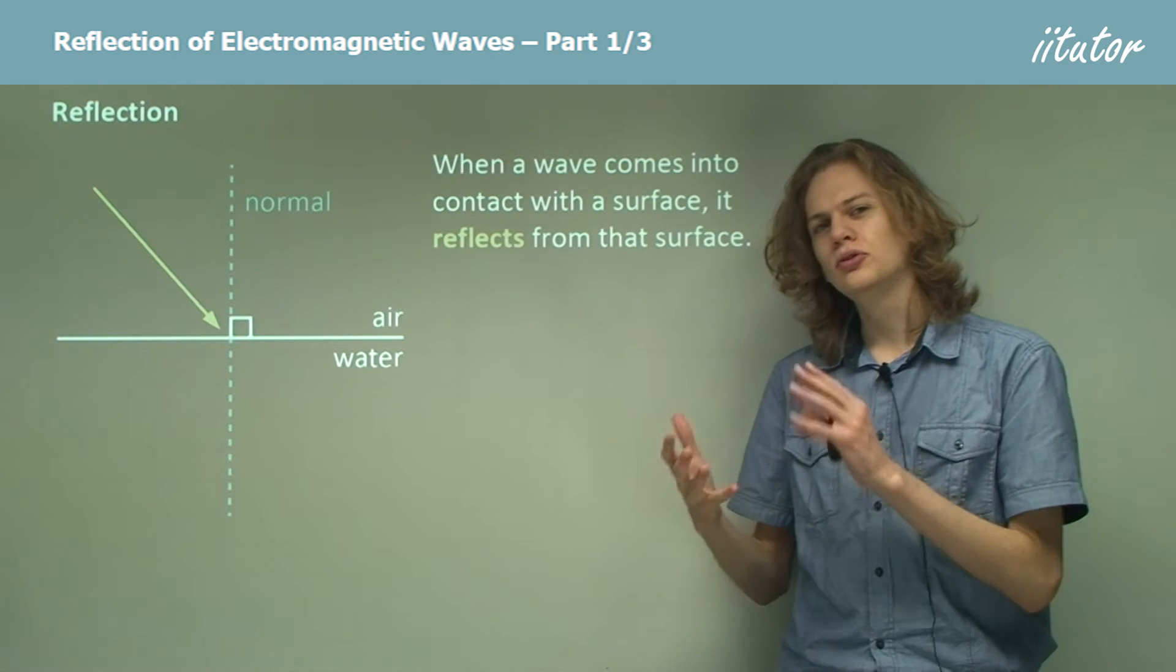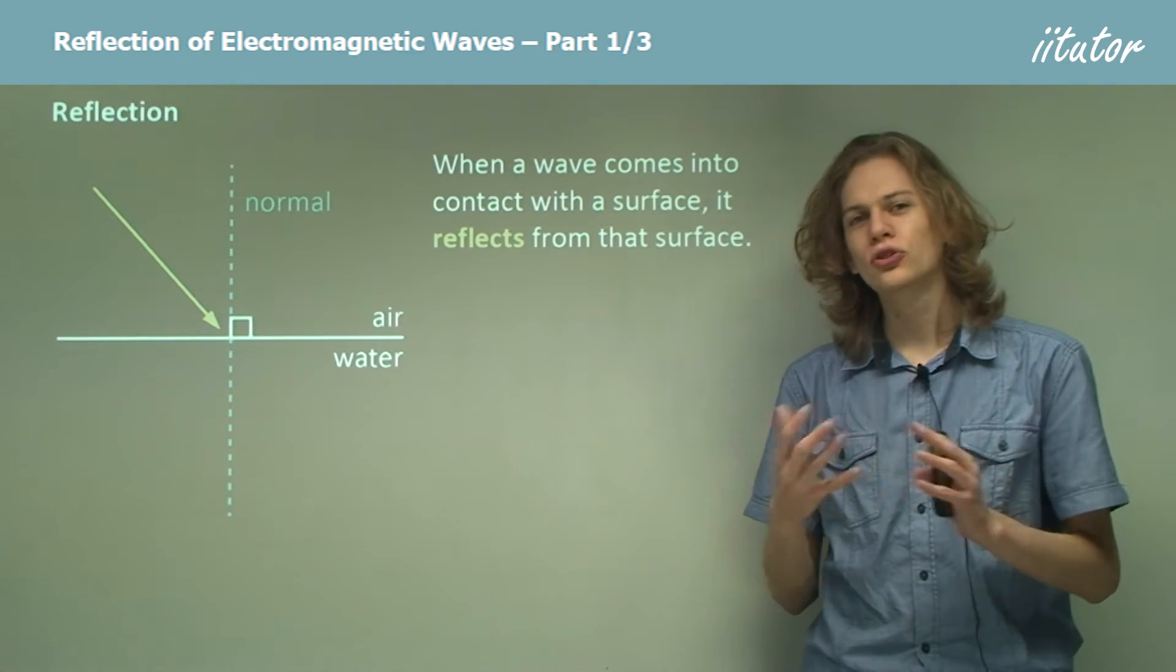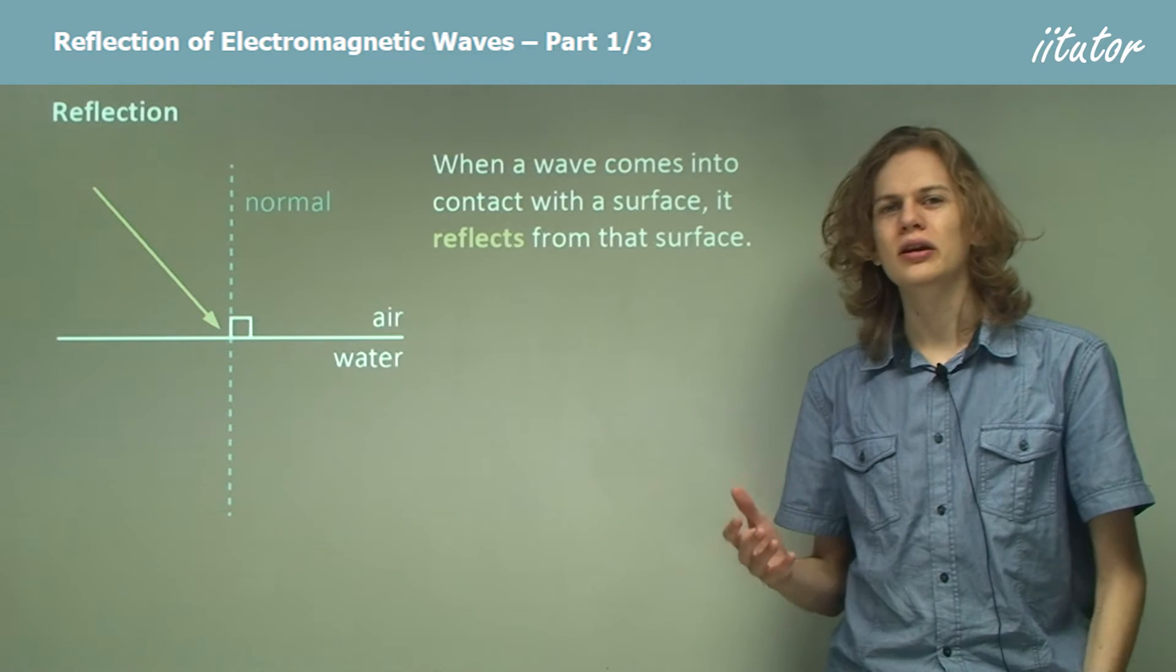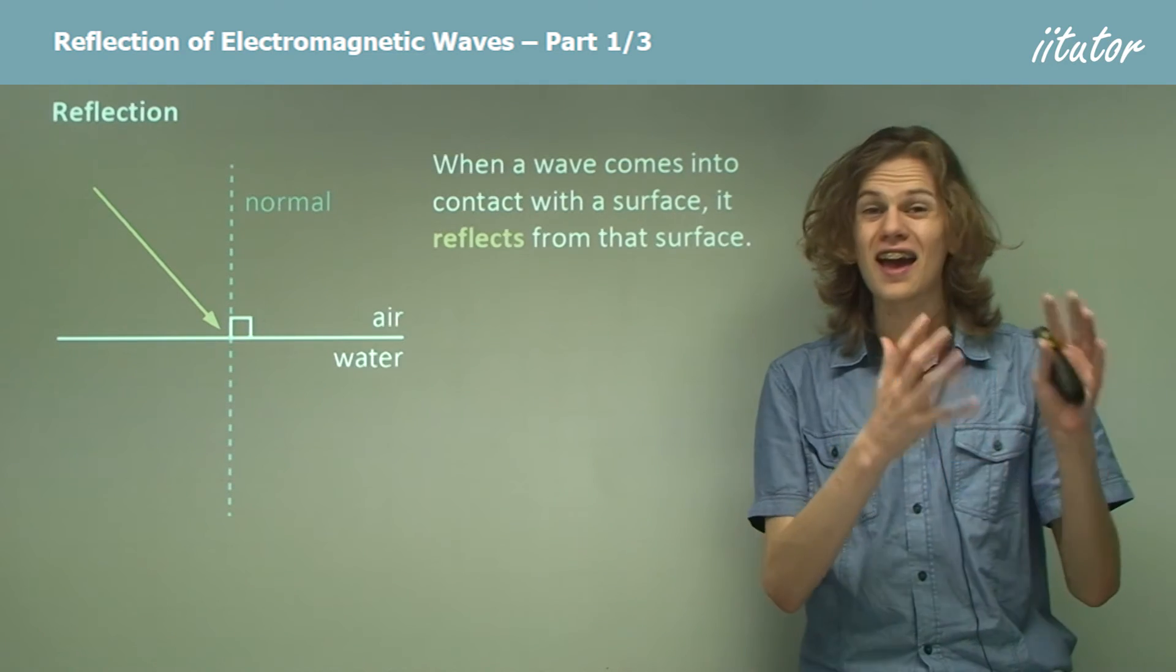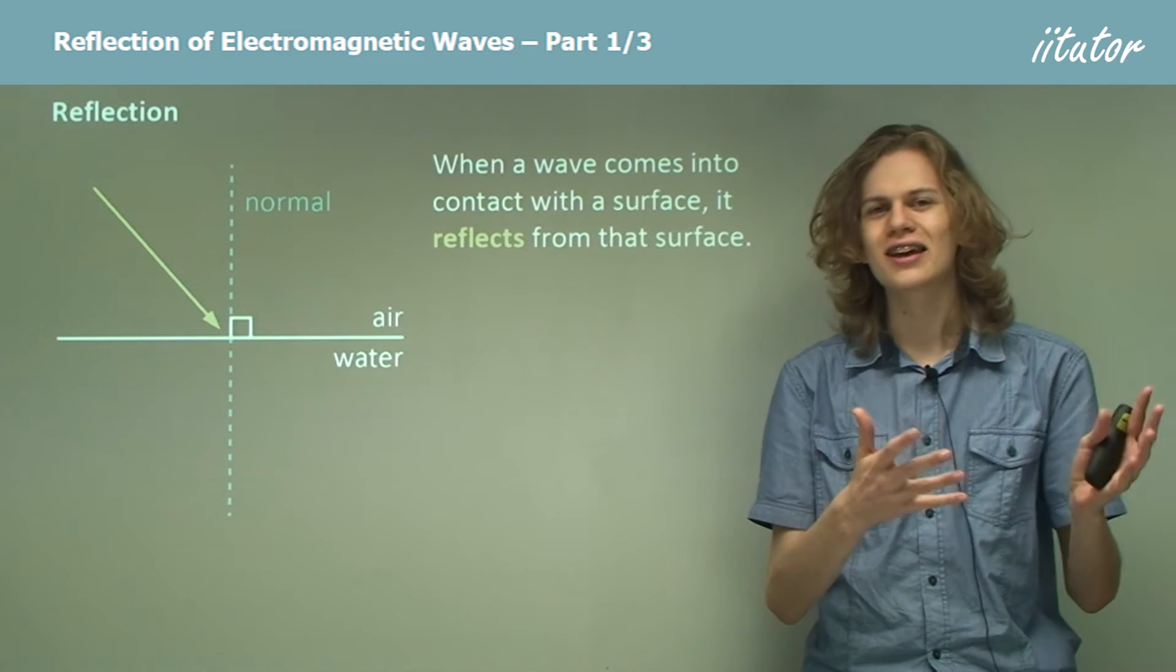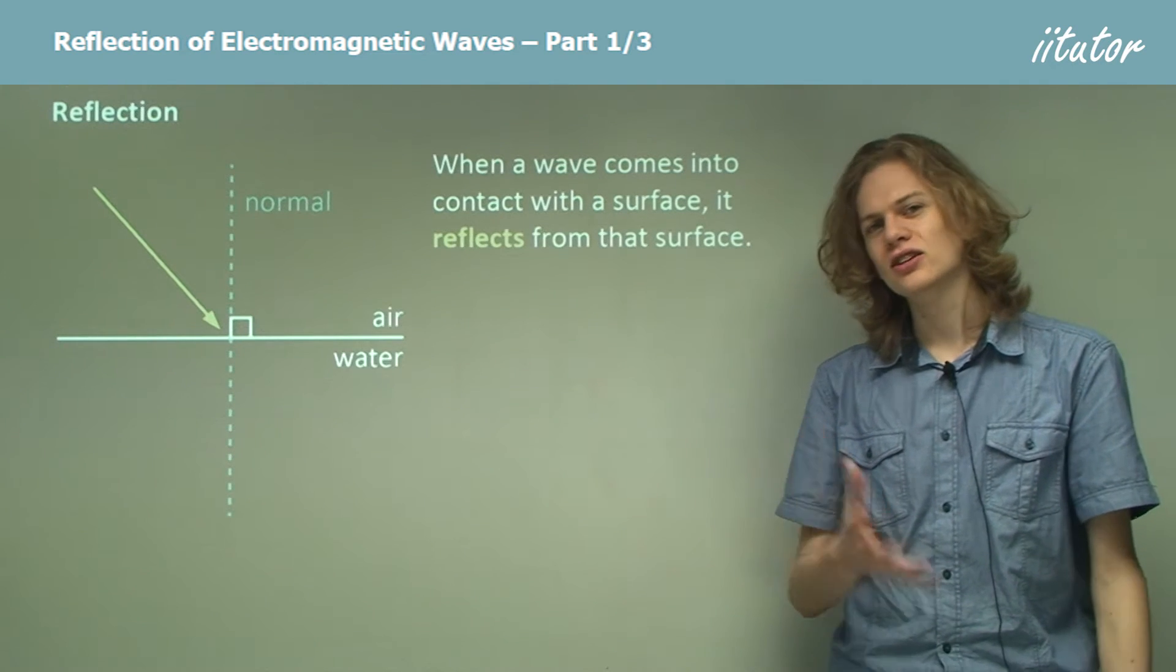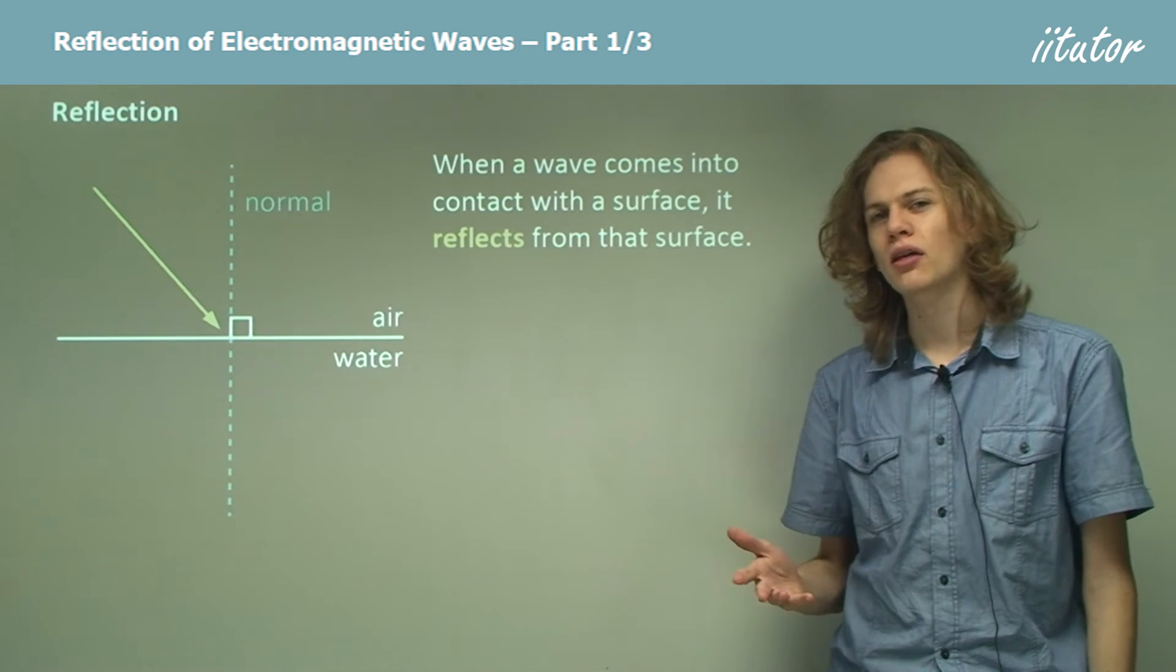So the boundary between two media is sometimes called a surface. We can think of a boundary between two media being, for example, the boundary between a piece of glass and air, or metal and air. In each of these cases, there's a surface that separates one medium from the other.